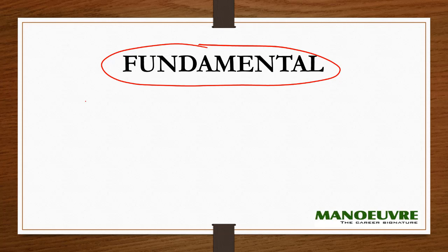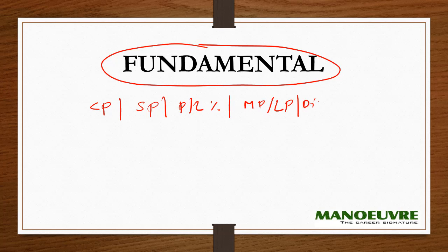There are certain terms you should know while solving questions based on profit and loss: cost price (CP), selling price (SP), profit or loss percent, mark price (also known as the list price), and discount. These are the certain terms you should know.